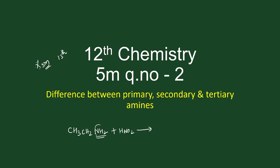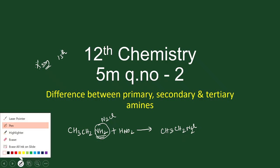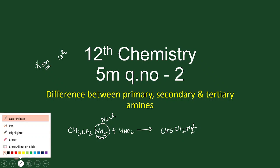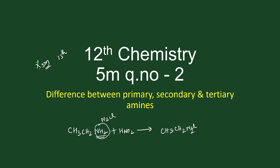This amine group, the NH2 group, is going to become an N2Cl group. So CH3CH2-N2Cl is formed first — that is diazonium chloride. This NH2 group becomes N2Cl first. This intermediate is very unstable.